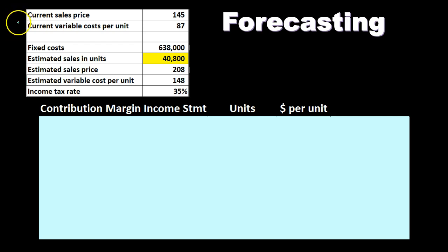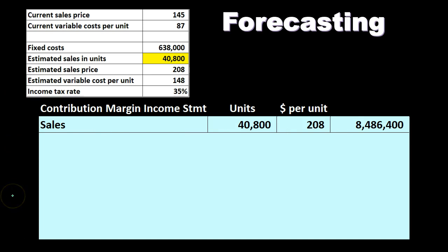This is the current year sales and the current year variable cost. Then we have the fixed costs — these may be very similar from year to year because they're fixed; the rent is the rent. Then we have the estimated sales in units, which is typically the thing we're going to change. We want this set up so we can change the sales units number and the whole worksheet will recalculate, giving us a new net profit number because of the breaking out between variable cost and fixed costs. Then we have the estimated sales price and estimated variable costs per unit.